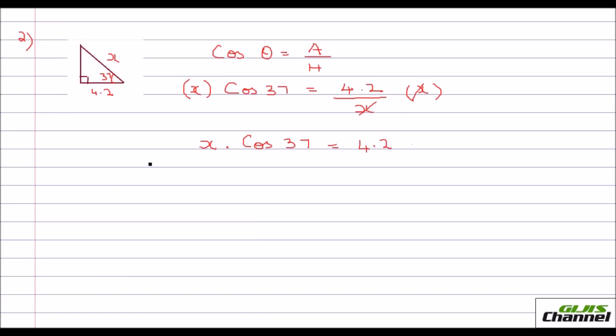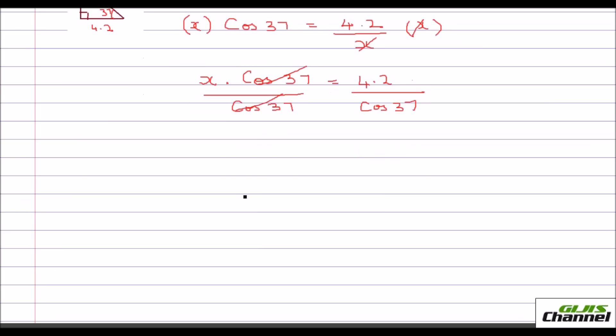Now, bring the cos, to remove the cos from your left hand side, you divide both sides by cos 37. So this cos 37 and cos 37 will cut. And you would have your x as 4.2 over cos 37.